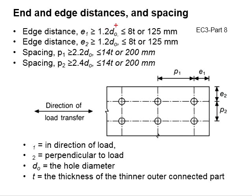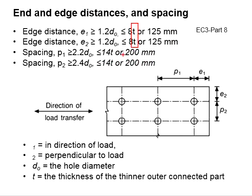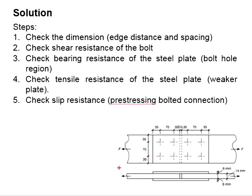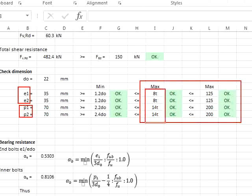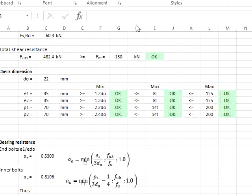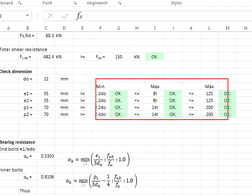Next, we need to check for the maximum spacing and edge distance, which is defined by the thickness of the thinner plate — either 8 times or 14 times the thickness, and constant values of 125 or 200 mm. From the figure, T is equal to 6 mm. E1, E2, P1, and P2 are checked against the maximum limits of 8T, 14T, 125 mm, and 200 mm. All dimensions are found to be acceptable, fulfilled within the minimum and maximum limits.